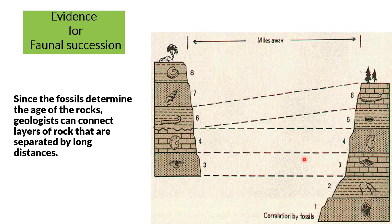Since the fossils determine the age of rocks, geologists can connect layers of rock that are separated by long distances. No matter what the layer of rock is, if you find certain fossils in it, you know the age of that rock, even if it's a different kind of rock. So we have this fossil on one continent and this fossil on another continent — even though it's a different rock, we know that the age of that rock must be the same.